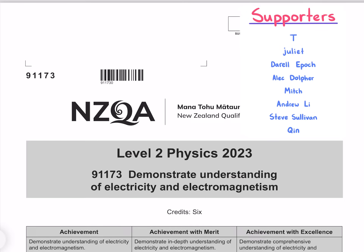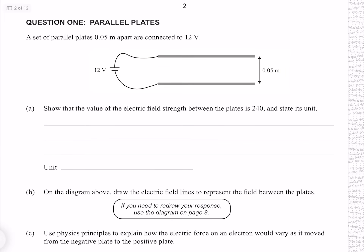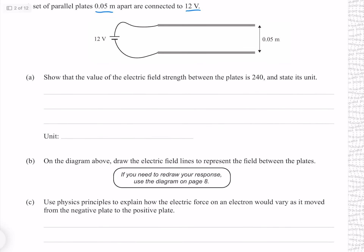In this video I'll be going through the 2023 electricity and electromagnetism exam. Question 1: a set of parallel plates 0.05 metres apart are connected to 12 volts. Show that the value of the electric field strength between the plates is 240 and state its unit.